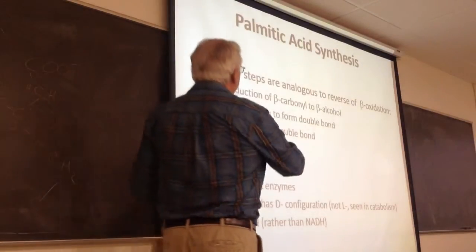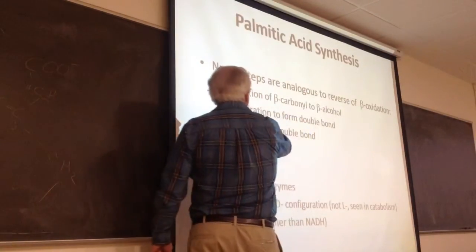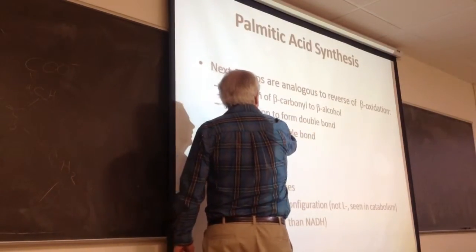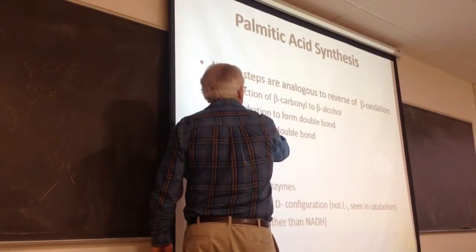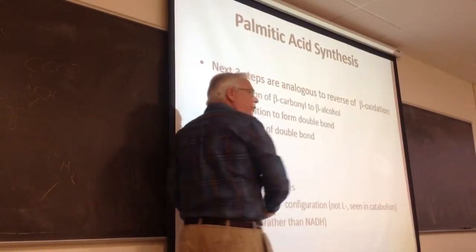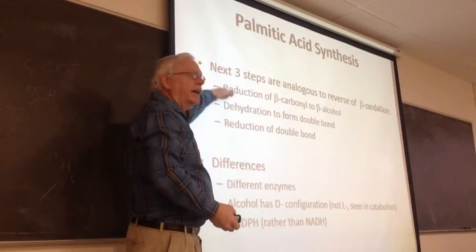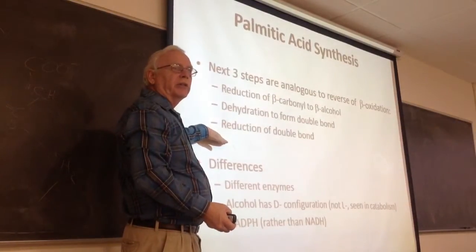We're going to reduce that carbonyl to an alcohol. We're going to dehydrate to form a double bond, and we're going to reduce the double bond. Exactly the reverse strategy of beta-oxidation.